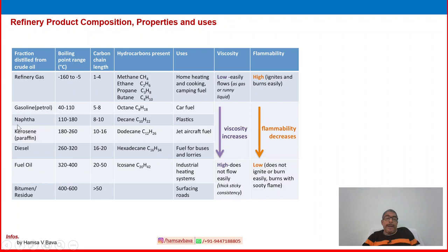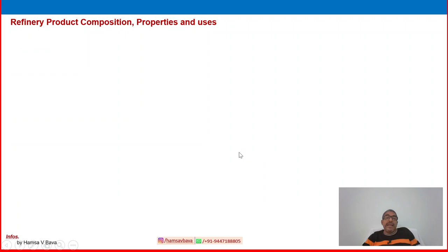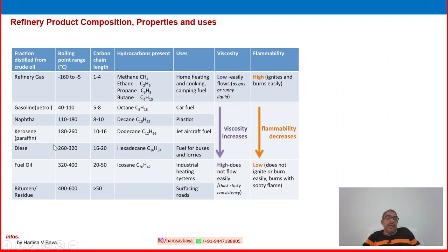These are the basic properties, composition, and applications to remember for overview before starting the detail of the refinery process. Carbon chain is increasing, boiling point is increasing, number of carbon atoms is increasing. Uses include fuel for solar lamps, fuel for buses and lorries, industrial heating systems, fuel oil, and surfacing and road-tarring and other applications. These are the crude oil and product properties, composition, and uses we have discussed.